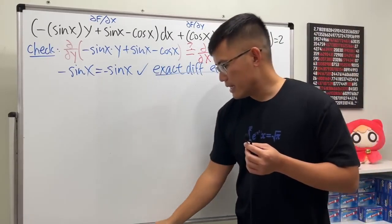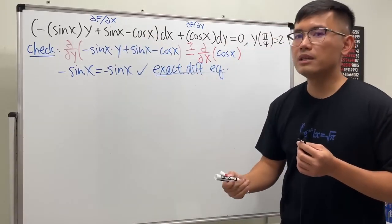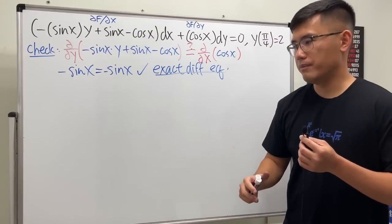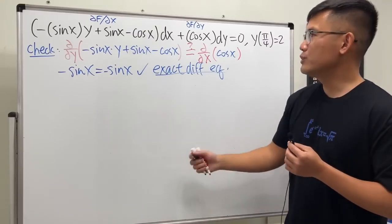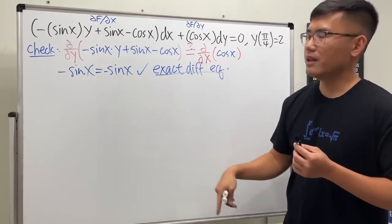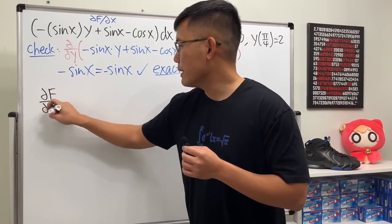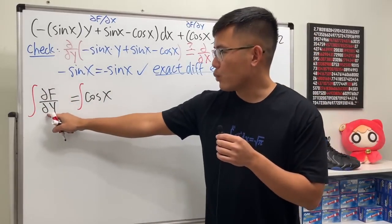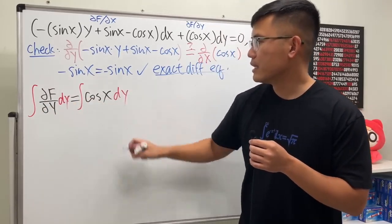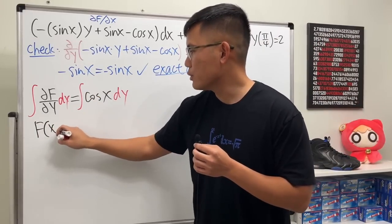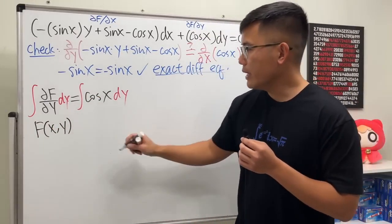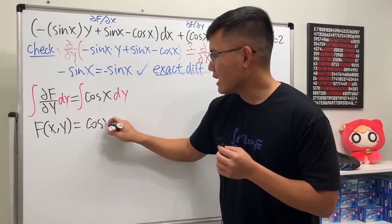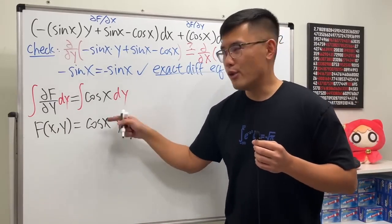We can proceed. The idea is we will pick one side, integrate with respect to that variable, and then do something else. Let's start with the simpler side — the partial of F with respect to y equals cosine x. We will integrate both sides with respect to y.